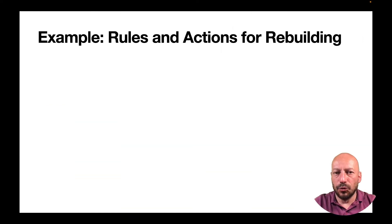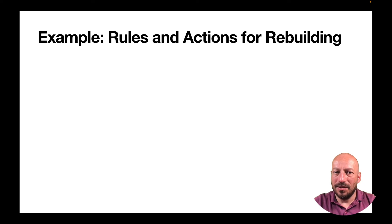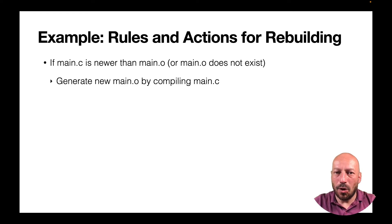Let's write down the rules for when we have to regenerate an object file from a source file: only if the source file has changed. If the source file is the same as before, the generated object code would not be different. One rule: if the source file is newer than the object file, or an object file does not exist at all, then you need to build this object file — but otherwise not.